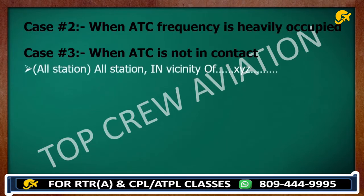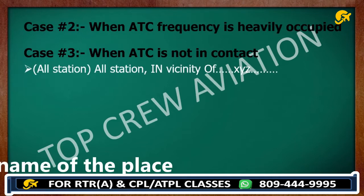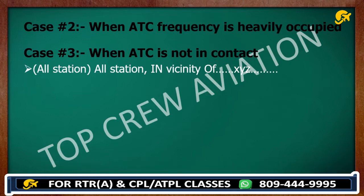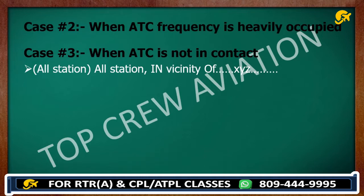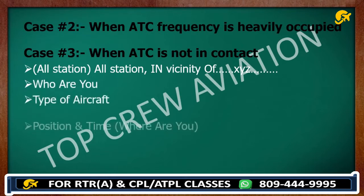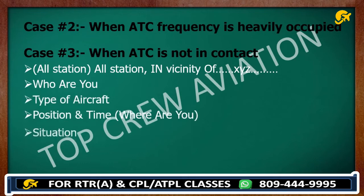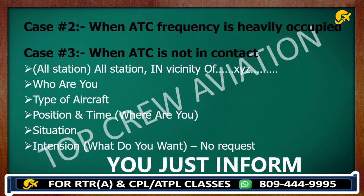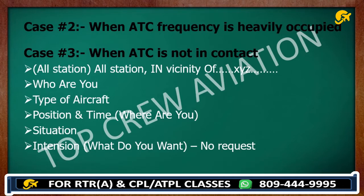The call starts with 'all station, all station in vicinity of XYZ' — XYZ being the name of the place, for example Jaipur. Then state your call sign, type of aircraft, position, situation as discussed earlier, and intention. You do not request — you just inform everybody what you are going to do.